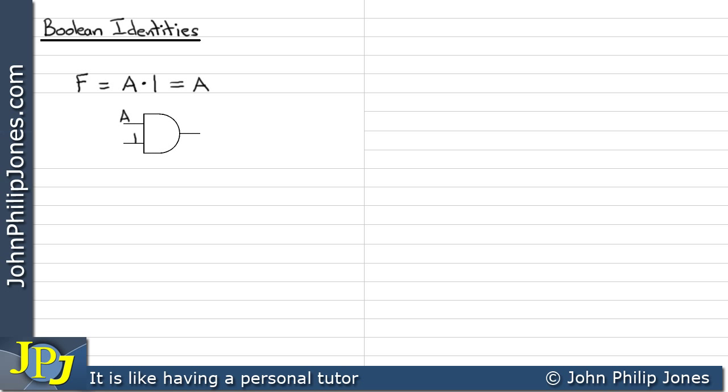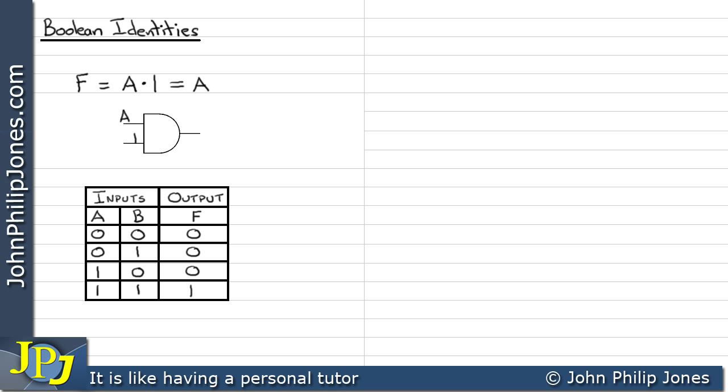But we need to look at the truth table for an AND gate to convince ourselves of that. The two conditions we're concerned with is this one and this one, because we can see in both cases this is where we have 1 at input B.